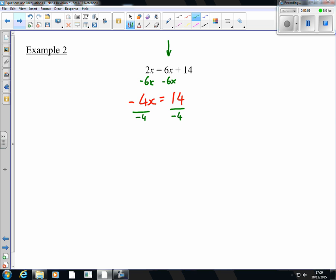To get rid of that, multiply by negative 4. And that's going to leave me x is equal to negative 14 over 4. I want you to notice two things here. Firstly, the negative is in front of the fraction. That's where it should stay. But also, I've left that as a fraction.